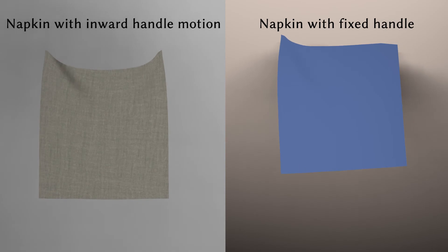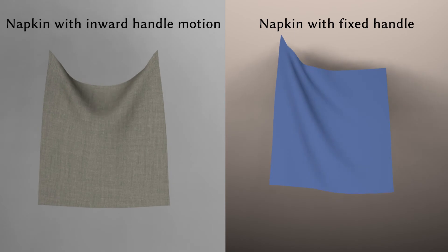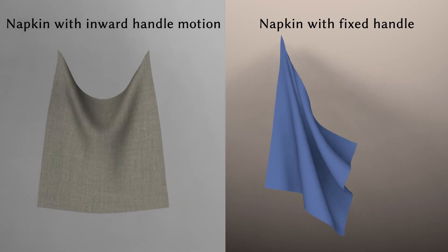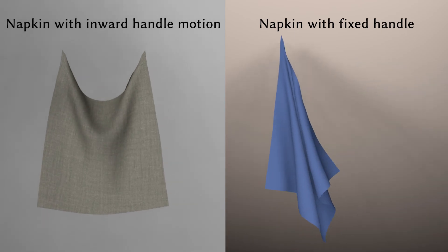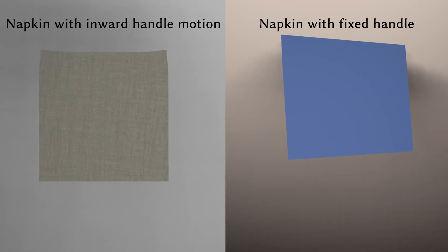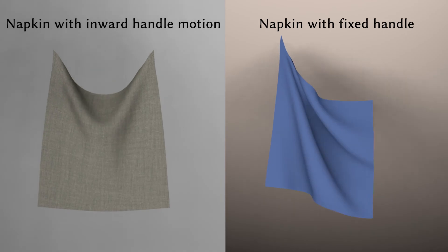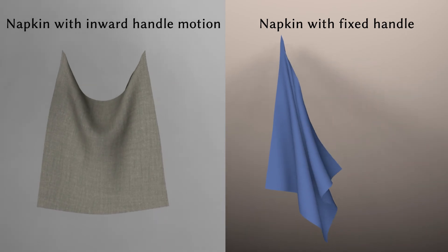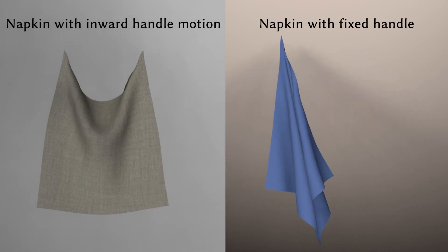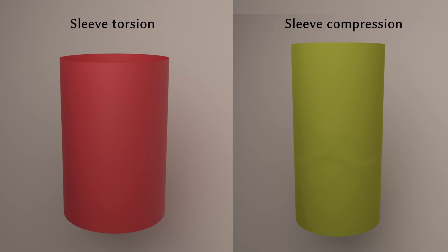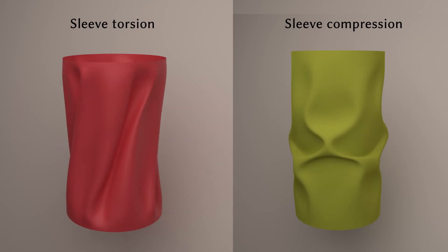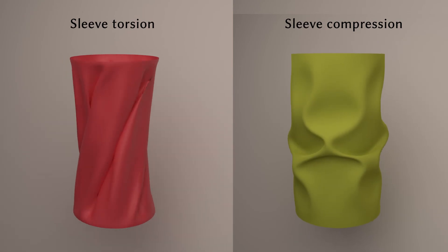Next, we present the experimental results. Neural Cloth Sim operates on continuous neural fields and produces realistic cloth deformations. We model different types of initial geometries and apply various boundary conditions. Our simulator generates the characteristic folding, buckling, and twisting effect of sleeves and skirts.